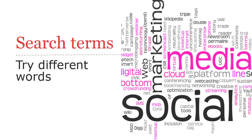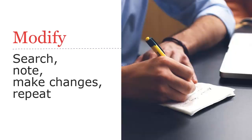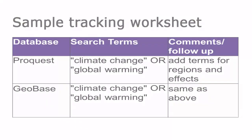Sometimes this is easy, and sometimes it involves a lot of trial and error. Systematic searching is a process, so you'll need to do some searches, look at the results, and modify or search again multiple times. It's useful to keep track of what you've done as you search. To do this, you can create a tracking worksheet listing things like where you searched, what terms you used, and notes to yourself about any future modifications.